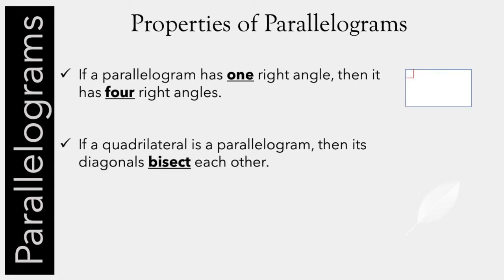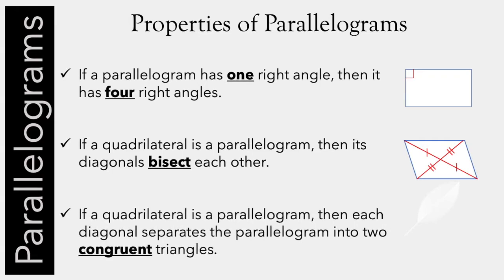If a quadrilateral is a parallelogram, then its diagonals bisect each other, or cut each other in half. And if a quadrilateral is a parallelogram, then each diagonal separates the parallelogram into two congruent triangles.